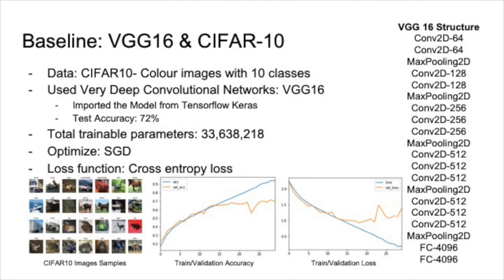For now, we wanted to talk about the results. For the baseline comparison, we actually used the VGG16 and CIFAR-10 dataset. VGG16 is a very deep convolutional network, which is really large. We have about 33 million trainable parameters, and we used the optimizer SGD and the cross-entropy loss for the loss function.